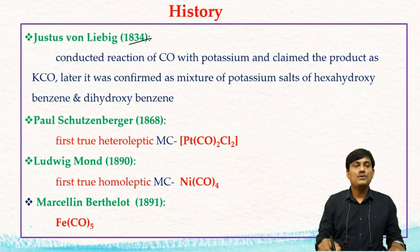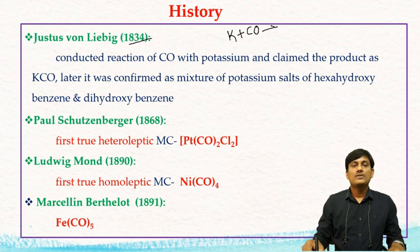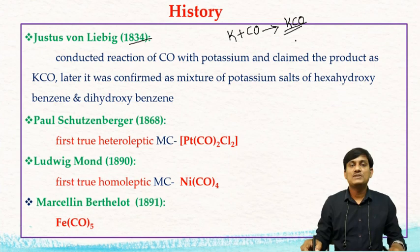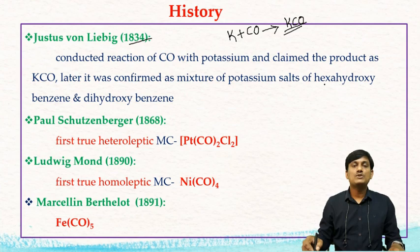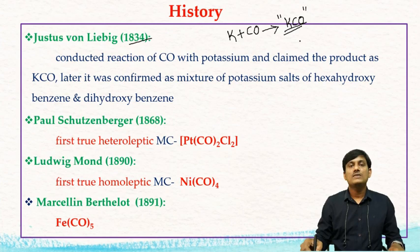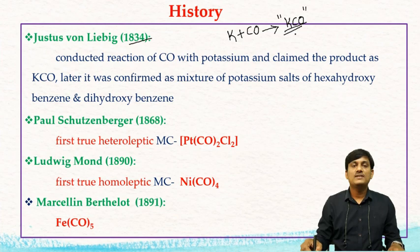Let us take the brief history of metal carbonyls. In 1834, Justus von Liebig conducted a reaction between potassium and carbon monoxide. He thought that there was a formation of KCO. Later, it was confirmed that there was no formation of KCO — there was a formation of potassium salts of benzene derivatives, specifically potassium salts of hexahydroxybenzene and dihydroxybenzene. Since KCO was not formed, it was not the first metal carbonyl in history.